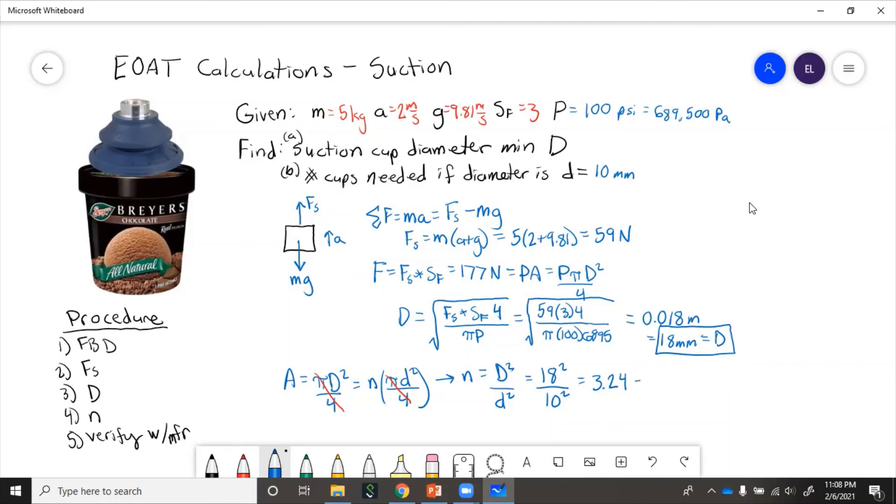So n equals d squared over d squared equals 18 millimeters squared over 10 millimeters squared equals 3.24, but we can't just use a quarter of a suction cup, so we always round up to a whole cup. So 1 cup if it was 18-millimeter diameter, 4 cups if it's 10-millimeter diameter.